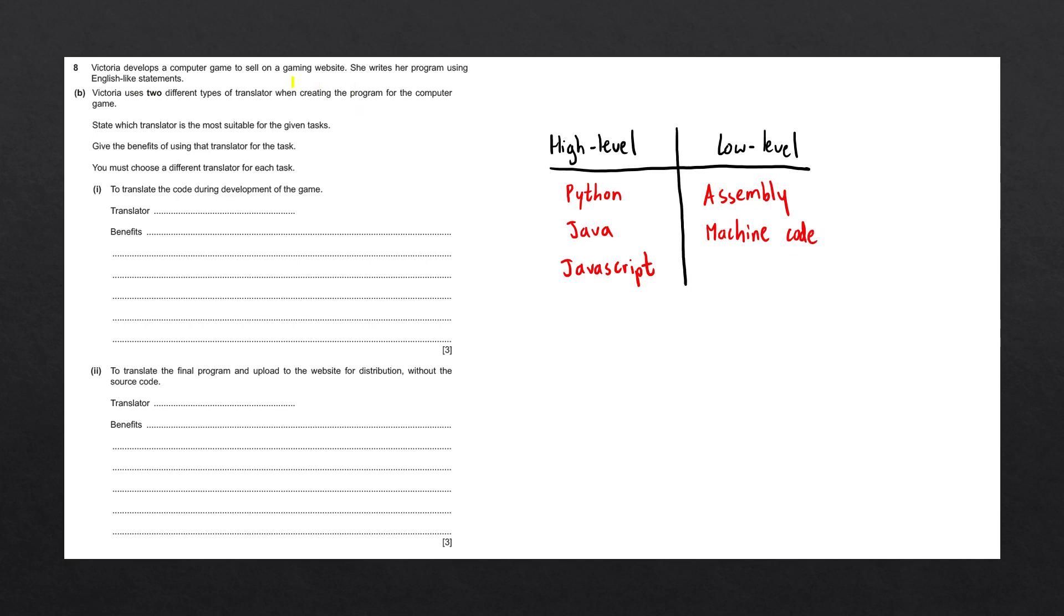The question says that Victoria writes her program using English-like statements. Low-level languages such as assembly and machine code are usually comprised of abbreviations or even hexadecimal or binary code, whereas high-level languages such as Python, Java, or JavaScript comprise English-like statements. So here we are speaking about high-level languages. When using a high-level language, we need to translate the source code into a low-level language so it can be executed by our CPU.